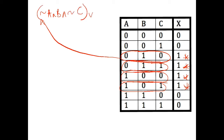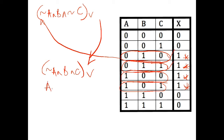And then I would combine that with an OR to the next one. The next one is NOT A AND B AND C. Or — so I've done one, two — the next one is A AND NOT B AND NOT C.